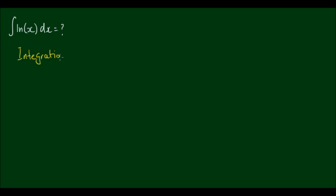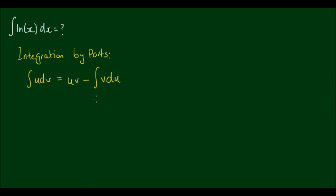So integration by parts. The rule for that is: the integral of u dv is equal to u times v, minus the integral of v du. And you may be wondering how would this work, considering there's not too many parts in this integral. Actually, there are two parts.